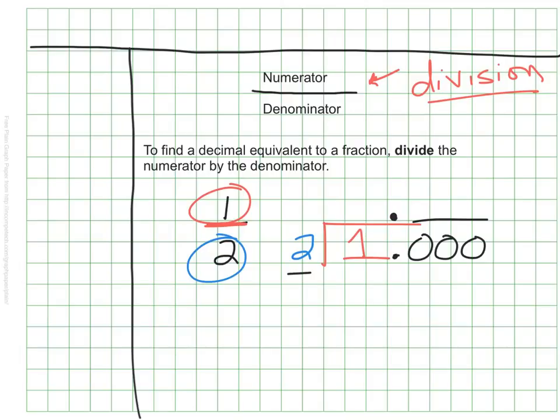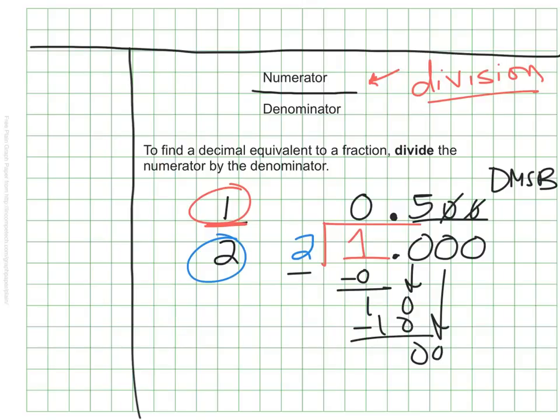And I'm going to divide with my normal process here. So, 2 does not go into 1, but 2 does go into 10 five times. And I can do all these zeros if I want to, but they won't have any bearing on the answer. I got 0.5, which we all know is the equivalent to the fraction 1/2. So, that just sort of proved that this process will work with the fraction that we already knew.